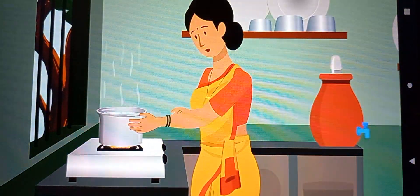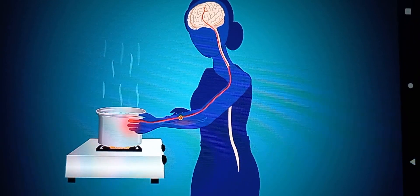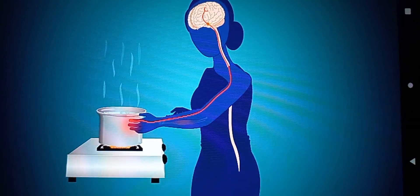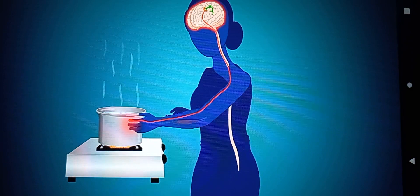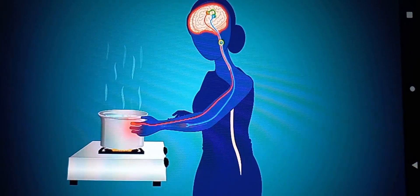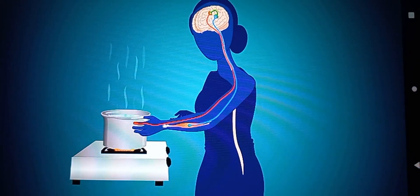We also learned that the spinal cord helps in transmitting electrical signals from different parts of the body to the brain and from the brain to the different parts of the body through nerves.